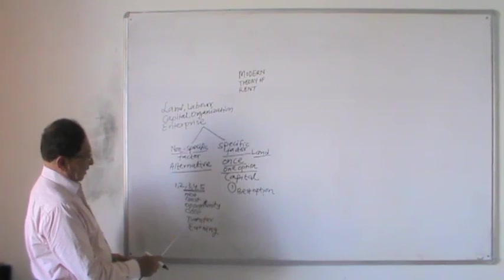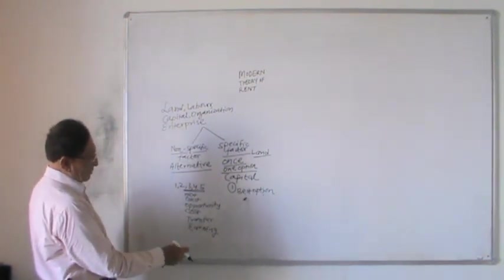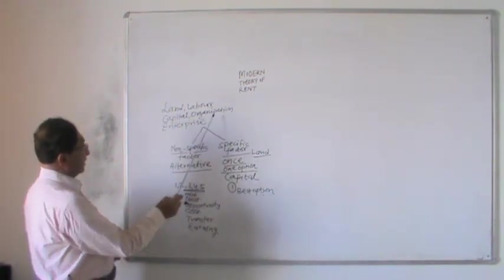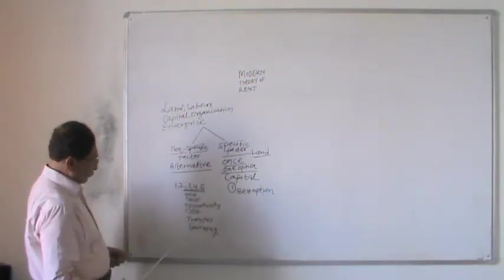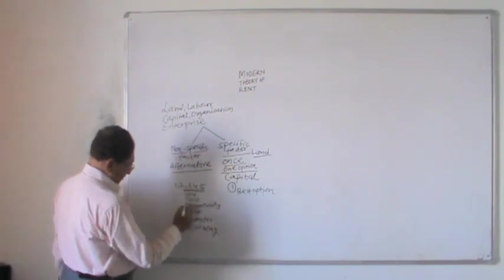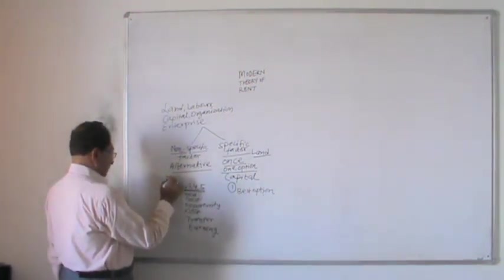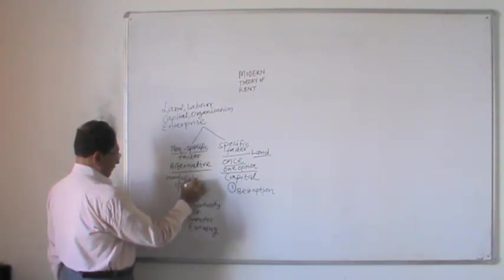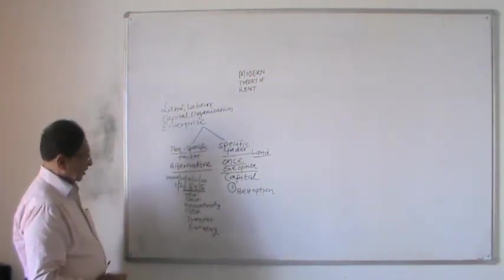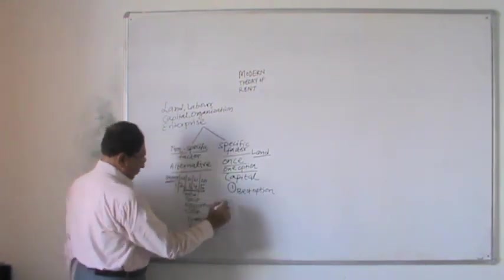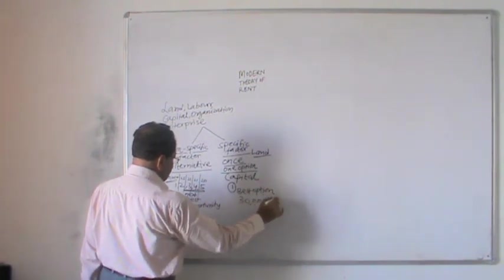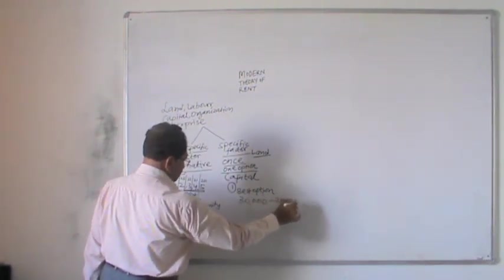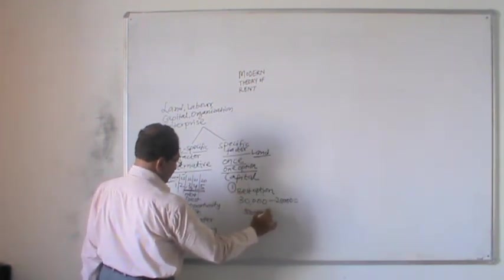The next best has a lower remuneration, and this is the best option. For example, an organization or labor may have two or three options — say one offer of 30,000, another of 25,000, then 22,000, 21,000, and 20,000. The best option is 30,000. Minus the next best alternative of 25,000 — therefore, this factor earns a surplus of rupees 5,000.